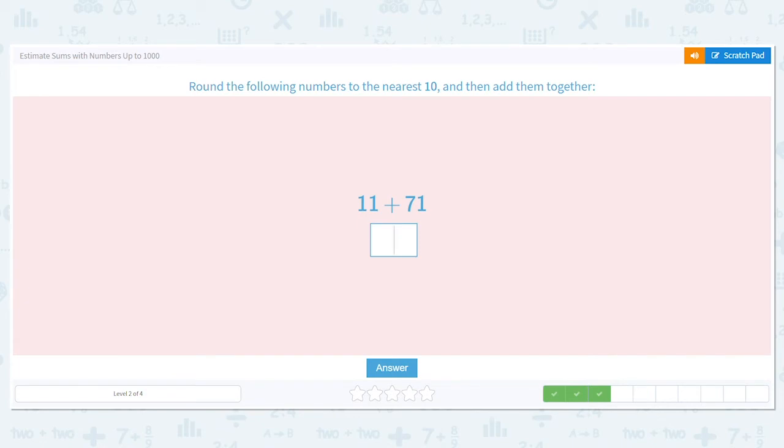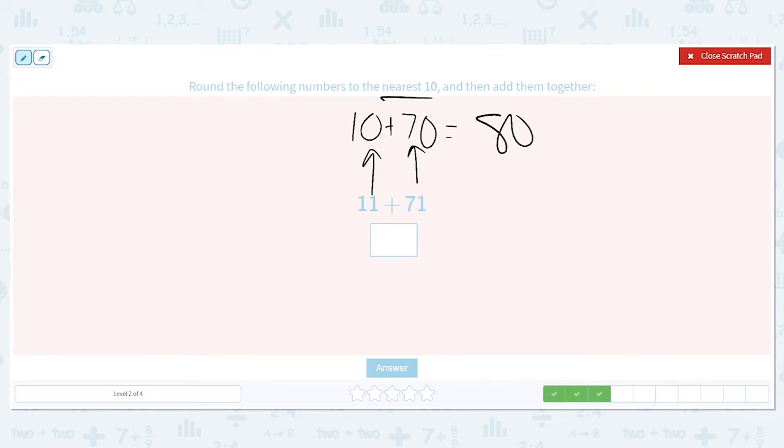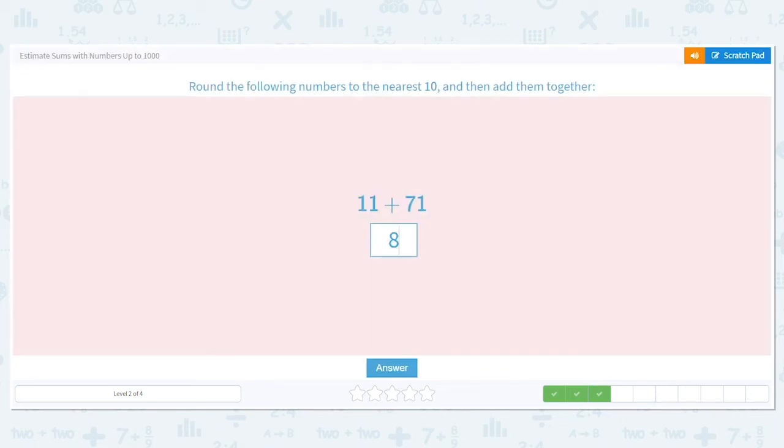Alright, again, rounding to the nearest 10. What does 11 round to? That rounds to 10. It's only one away from it. How about 71? What multiple of 10 does it round to? It rounds to 70. It's really close to 70. Now we can add. What is 10 plus 70? That equals 80. Nice job. So my estimate here is 80.